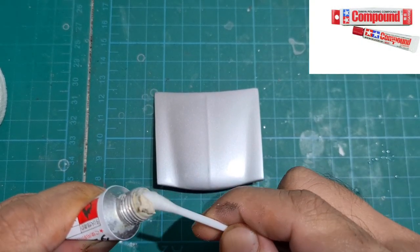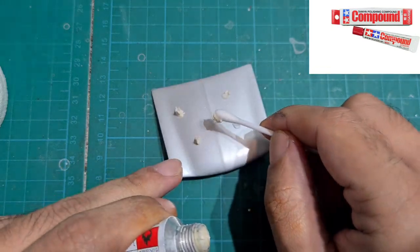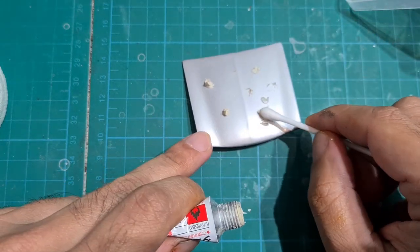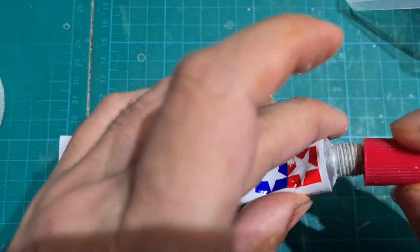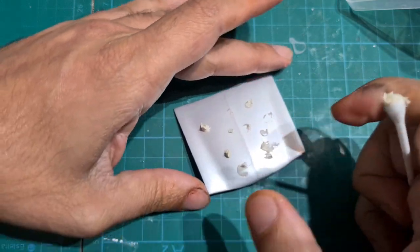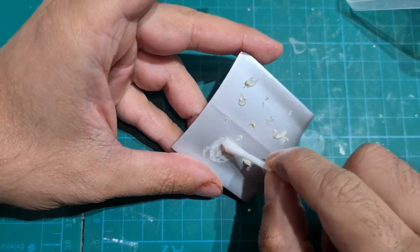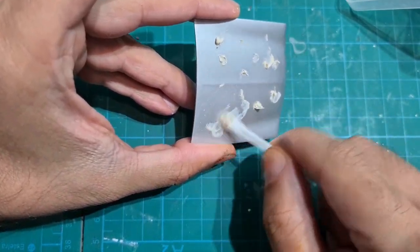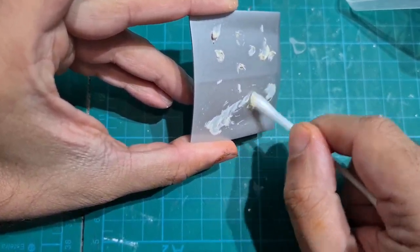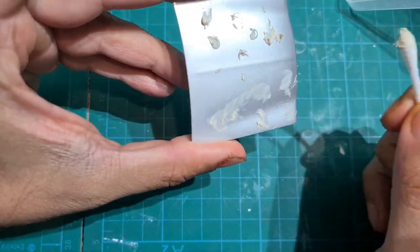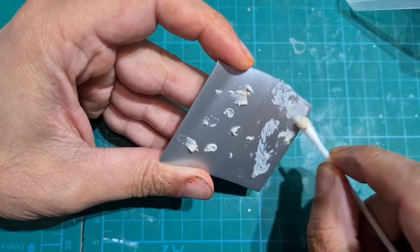So the first polishing compound we are going to apply is the Tamiya Polishing Compound Coarse, and I like to apply it using an earbud, as you can see here. I apply equal amounts on both sides of the hood, and then with a circular motion using the same end I used to apply the polish, I start moving in a circular motion as you see here. Now all this I'm going to show you in real time the first one, and then on the next step I will speed it up because it's pretty much the same step with a different compound.